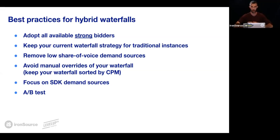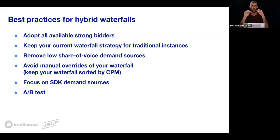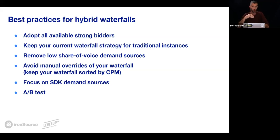Next: avoid manual override of the waterfall, meaning keep your waterfall simple and sorted by CPM. A situation in which a lower CPM is placed above a higher CPM instance in the waterfall is very challenging for bidding and will impact performance. Make sure high CPMs are on top and it gradually goes down — think of it as a semi-auction. If your instances are not perfectly optimized, in a 100% traditional setup it might not affect you much, but in bidding, the effect may be fatal. Bidding sources may not be able to work well and scale in your environment, so keep things simple.